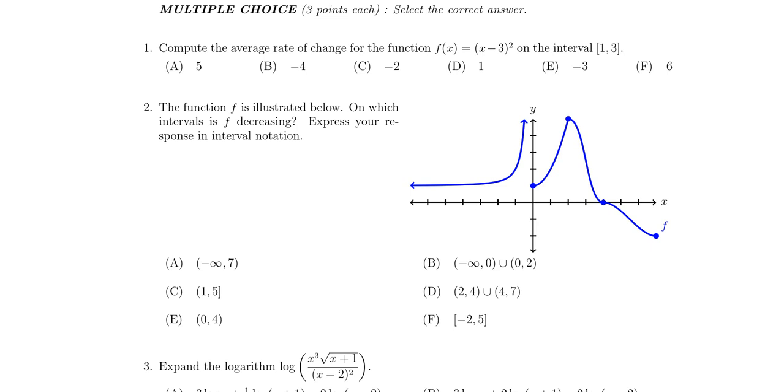So remember with average rate of change, your delta y over delta x always has the formula where we're going to take f of 3 in this case, because that's the second endpoint there, minus f of 1, that's the first endpoint, and then you're going to divide that by 3 minus 1, like so.